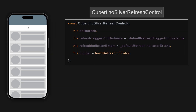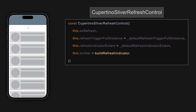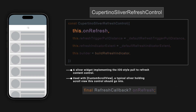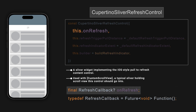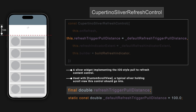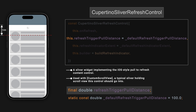CupertinoSliverRefreshControl renders an iOS style indicator as a sliver widget. It should be used with widgets that can hold render slivers, such as CustomScrollView. It also has an onRefresh property similar to before that must return a Future. refreshTriggerPullDistance is the distance the list should be dragged in order to trigger the onRefresh function.